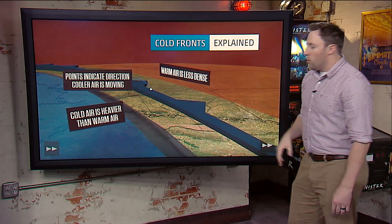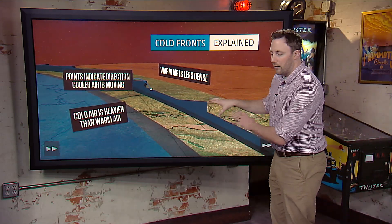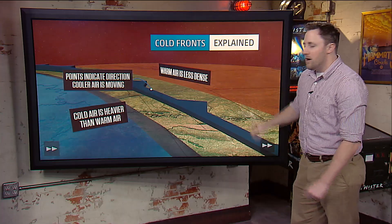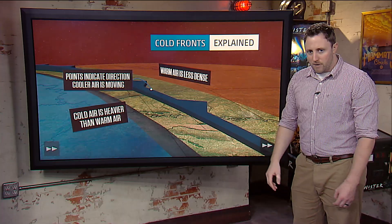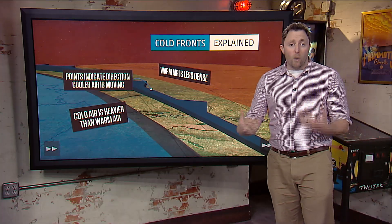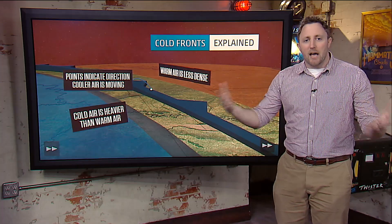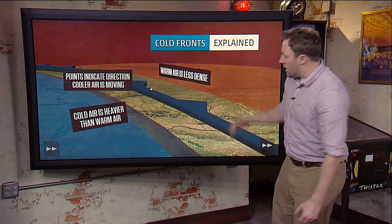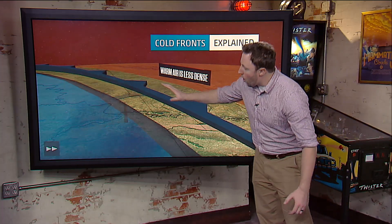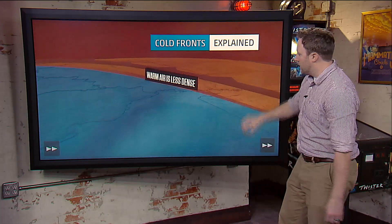Now these arrows will point in the direction that the cold air is moving. The cold air is advancing on the warm air. Now warm, moist air is much less dense, which means it's lighter in a sense, and it will tend to rise over a cold air mass.